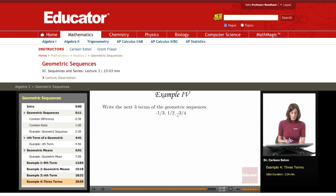In order to find a term, I need to have the common ratio. So let's find that common ratio by taking one-half and dividing it by the previous term, which is negative one-third.